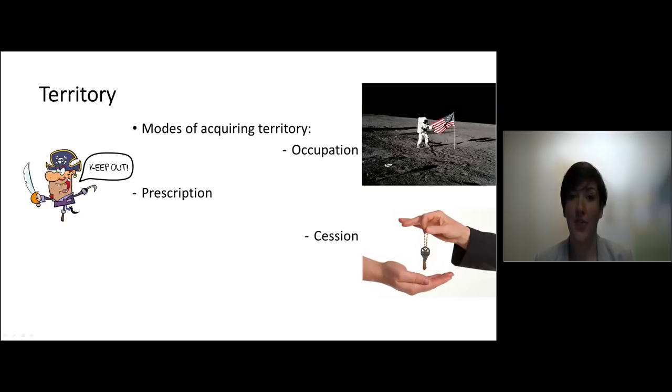Then there's the cession of territory. So that means that one state transfers the territory to another state. And this happens with the Dutch transfer of New Amsterdam in the hands of the British, which called it New York. And finally, there is annexation of land. And that happened, for example, it's a unilateral act where one state takes over the control over another territory. And that happened with Crimea by Russia.